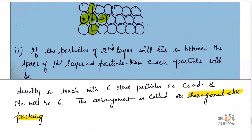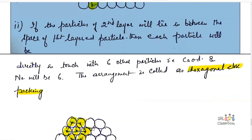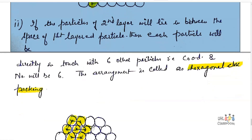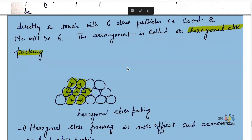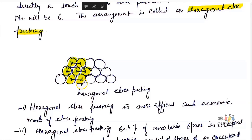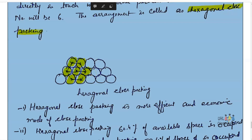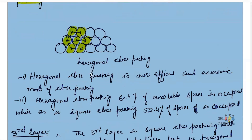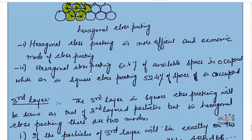The second method is if the particles of the second layer will lie in between the spaces of the first layer particles, then each particle will be directly in touch with six other particles. This arrangement is called hexagonal close packing. Hexagonal close packing is more efficient and economic, in which 60.4% of available space is occupied, whereas in square close packing, only 52.4% of space is occupied.